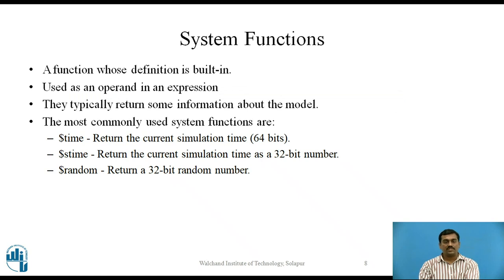System functions are just like System Tasks, except that they are used as an operand in an expression. The most commonly used system functions are: the $time function which returns the current simulation time in 64-bit binary format; $stime which returns the current simulation time as a 32-bit number; and $random which returns a 32-bit random number. These functions can all be passed as an operand in an expression.